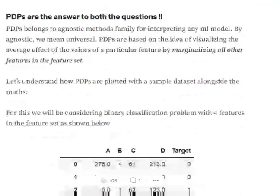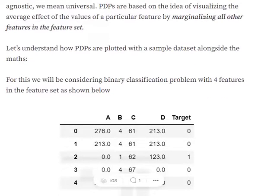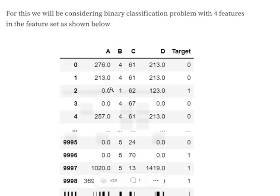First, we will try to understand how to calculate the partial dependence, and then we will be plotting that partial dependence to form the partial dependence plots. Assume that we have this particular sample dataset with us—a training dataset.